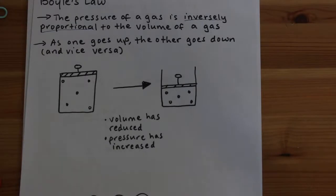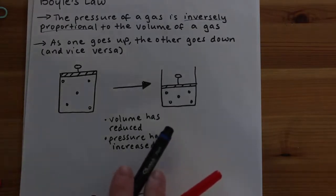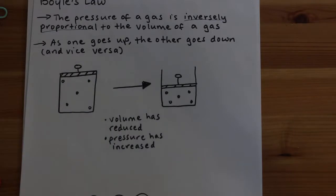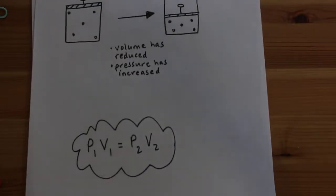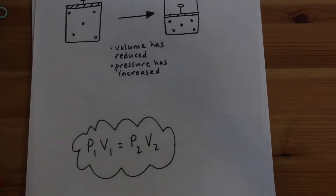We can sometimes think about the pressure of the gas as being analogous to the concentration of the gas. Because the concentration of gas molecules is higher per unit area, the pressure is higher. In terms of an equation, we write Boyle's Law as P1 multiplied by V1 equals P2 multiplied by V2. This means that the initial pressure times the initial volume equals the final pressure times the final volume.